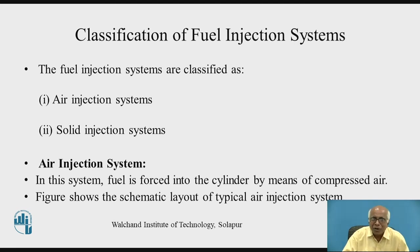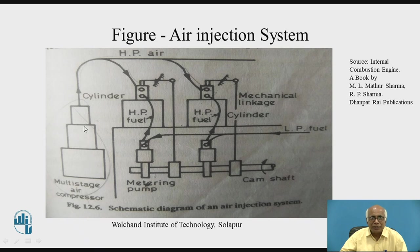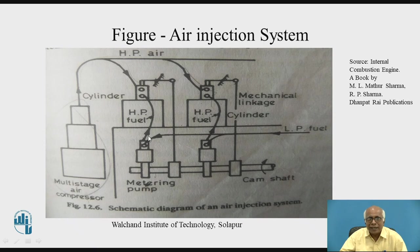The figure shows the schematic layout of a typical air injection system. A multi-stage air compressor raises the pressure of the air, which then goes to the different cylinders. Fuel is transferred first by a low-pressure transfer pump to a metering pump, which further raises the pressure. High-pressure fuel and compressed air then mix and are forced inside the cylinder. All metering pumps are controlled with the help of a camshaft through mechanical linkages, which adjust the timing.